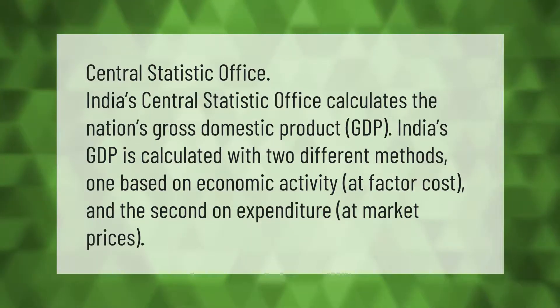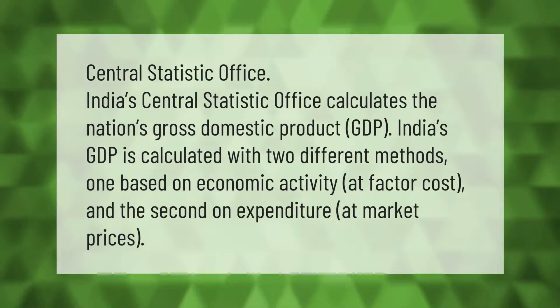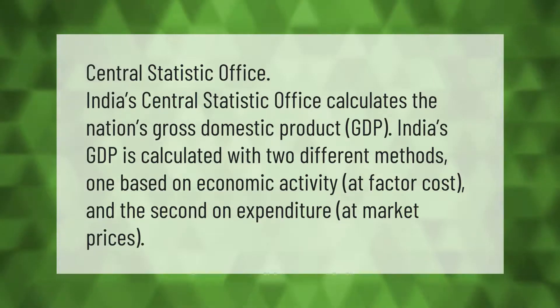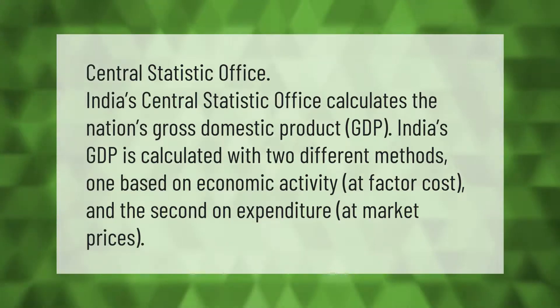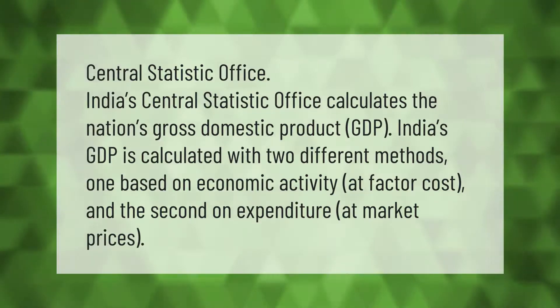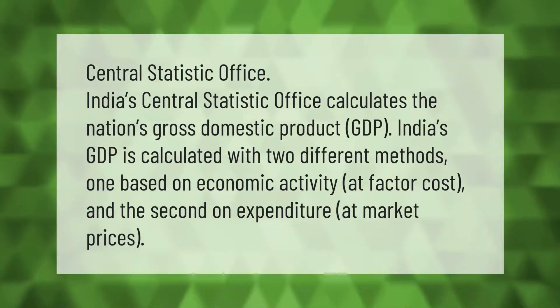India's GDP is calculated with two different methods: one based on economic activity at factor cost, and the second based on expenditure at market prices.